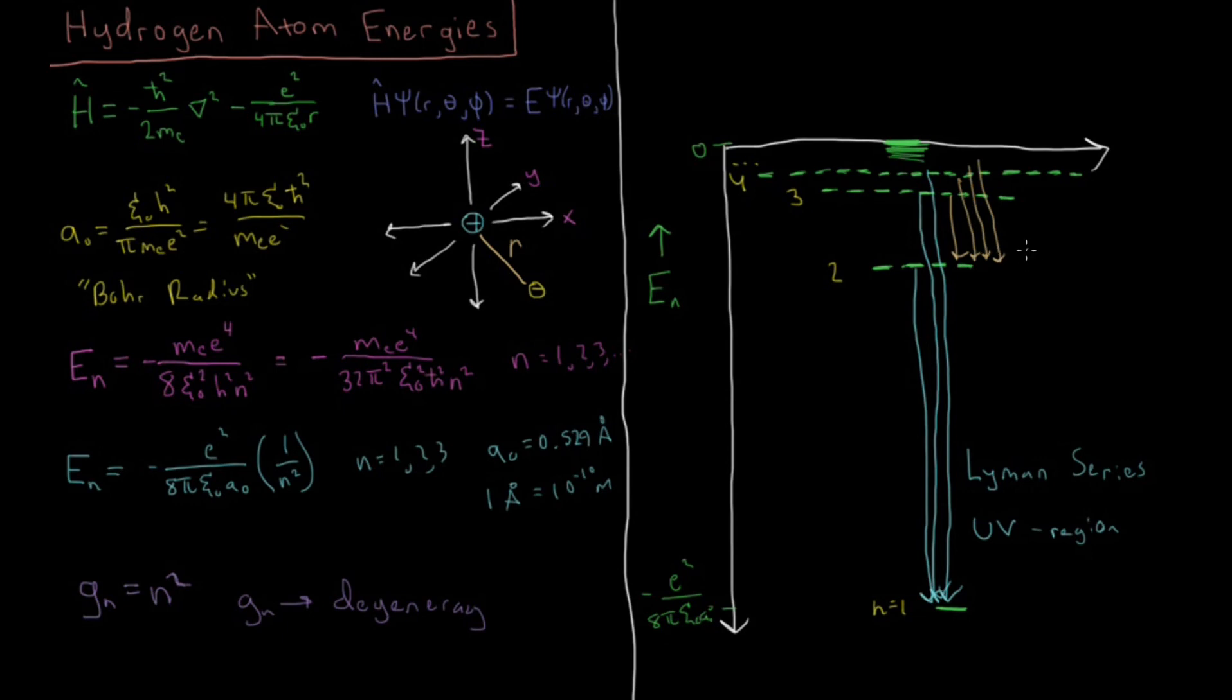Those were the four lines in the visible, which were the Balmer series. And those were in the visible range of the spectrum. There's a purple, blue, green, and red photon there of those various energies. So that tells you what that energy scale is like.